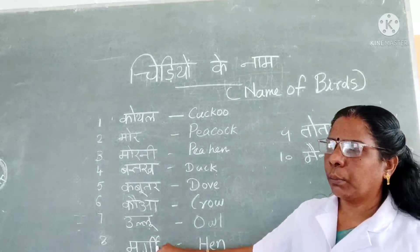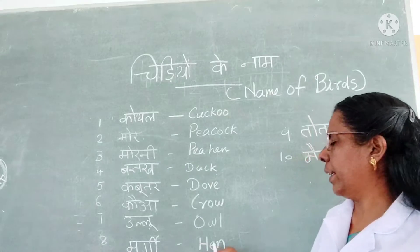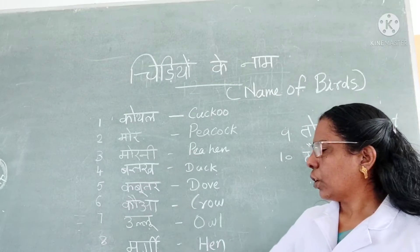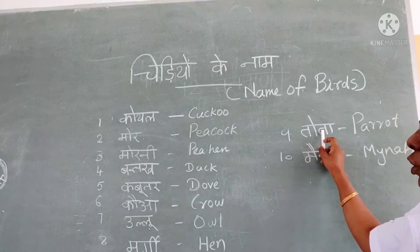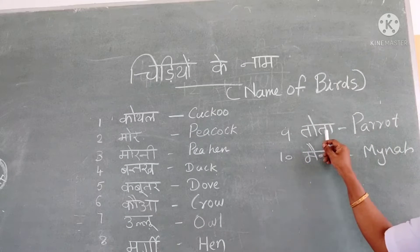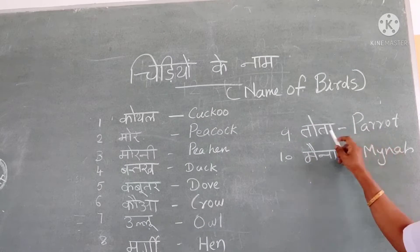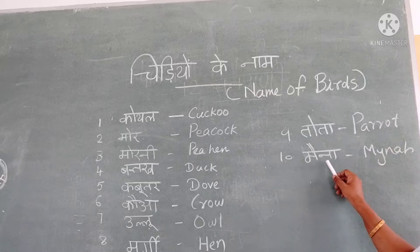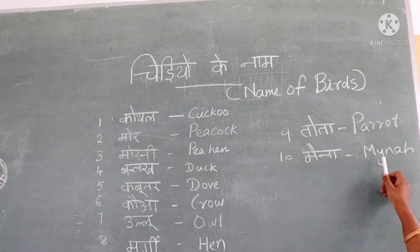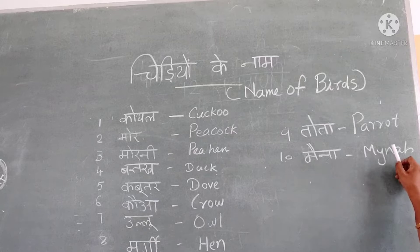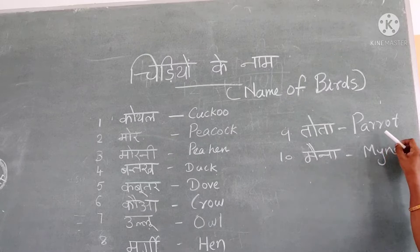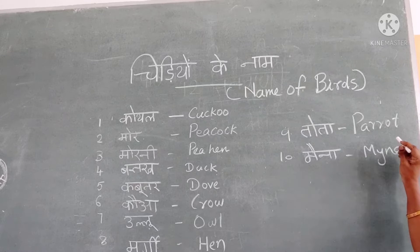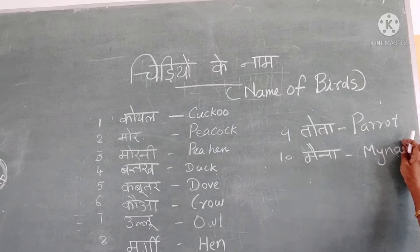Then murgi. Murgi kya hai? Hen. Murgi — hen. Next, tota. Tota kya hai? Parrot. Tota means parrot. Maina. The same word — Maina. Maina, it means the name is the same both in English and Hindi — Maina.